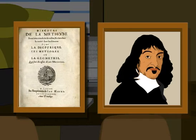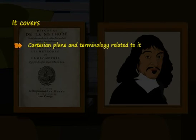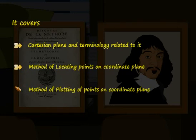In this chapter, you will become familiar with the basics of coordinate geometry. It covers Cartesian plane and terminology related to it, method of locating points on coordinate plane, and method of plotting points on coordinate plane. This chapter will help you in easily finding the locations of various places on maps.